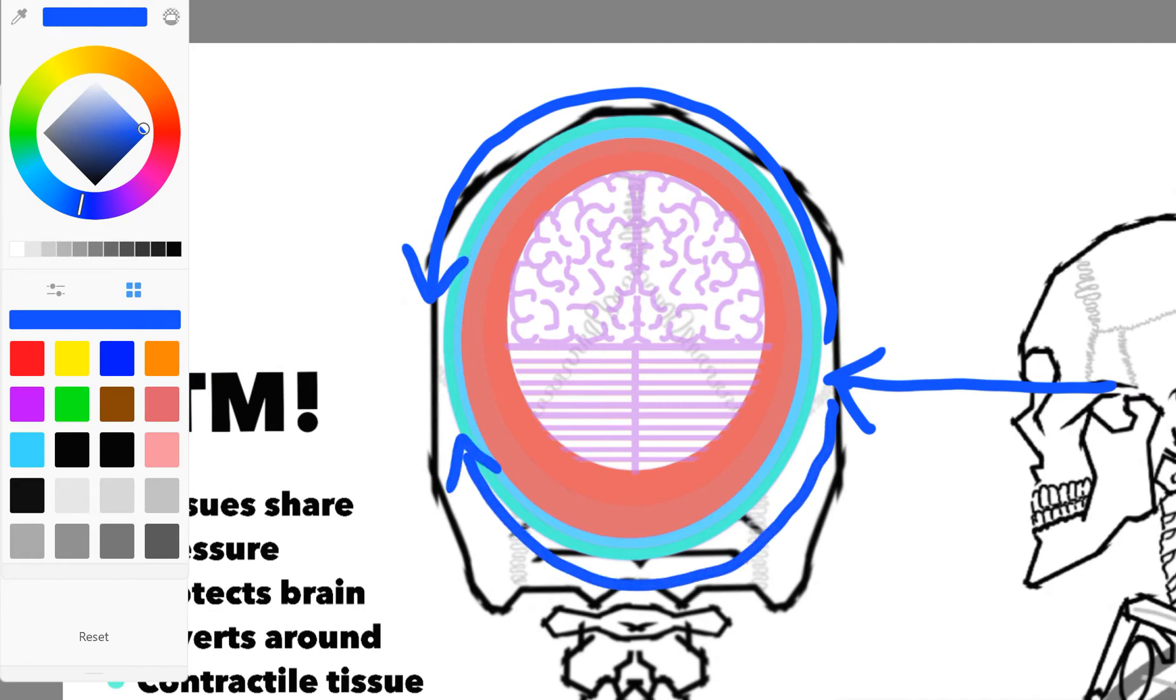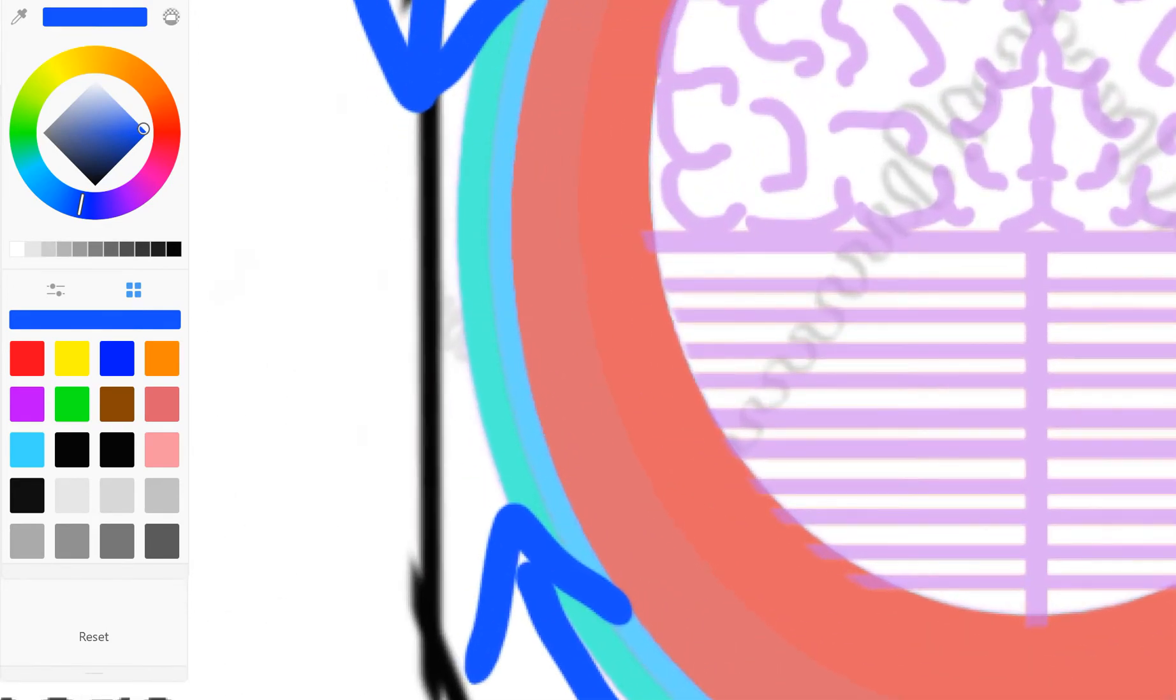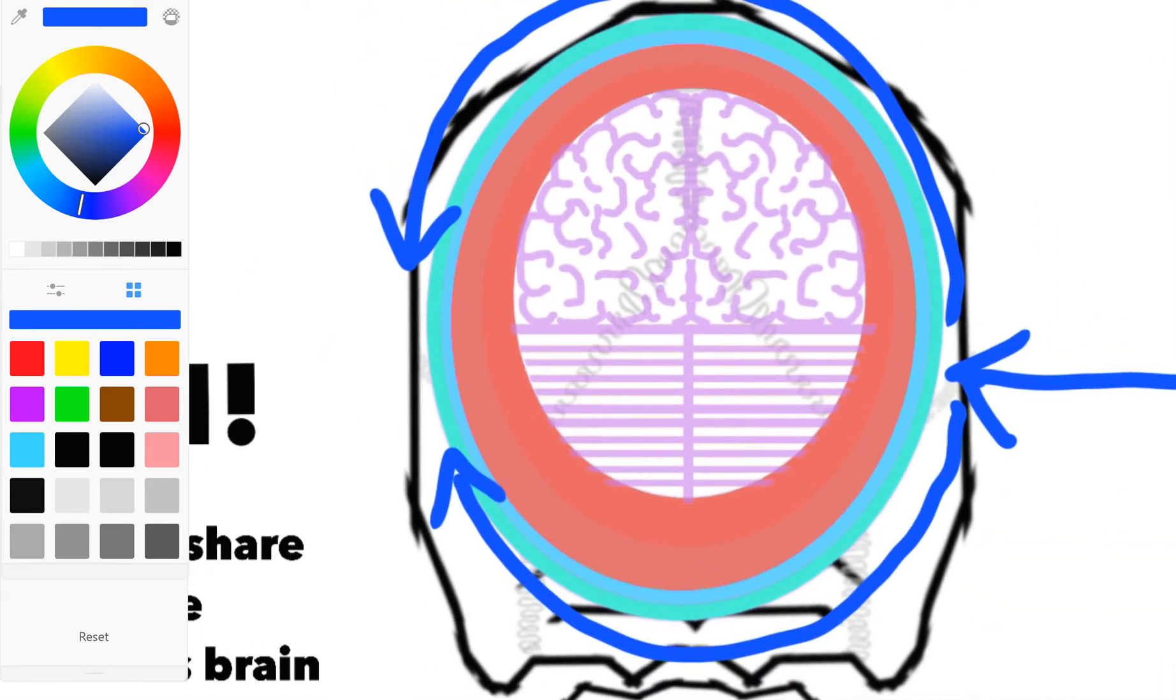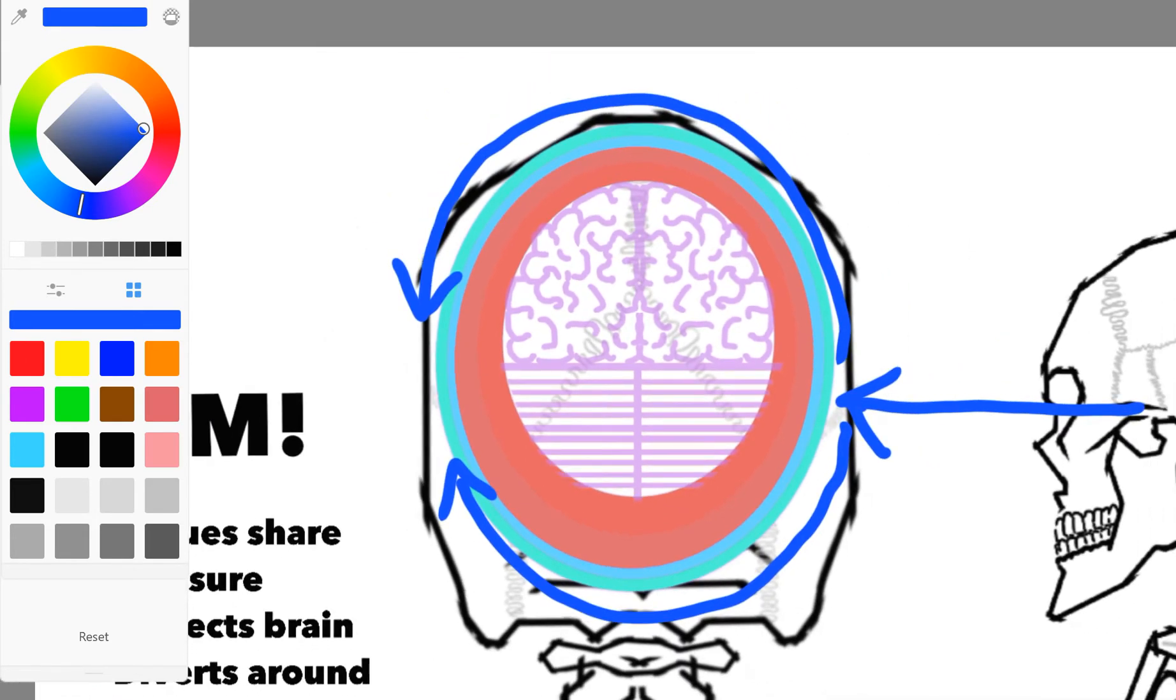We've got our CSF layer, represented by the blue here. We have our meningeal layer - the dura, the pia, the arachnoid - and it contains that cerebrospinal fluid within it. These are protective of the brain but they also fuse those tissues.